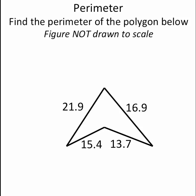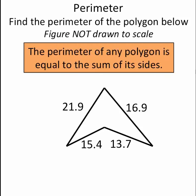This problem is asking us to find the perimeter of the polygon below. Remember that the perimeter of any polygon is equal to the sum of its sides. So to find the perimeter of a polygon, I simply have to add up its various sides.